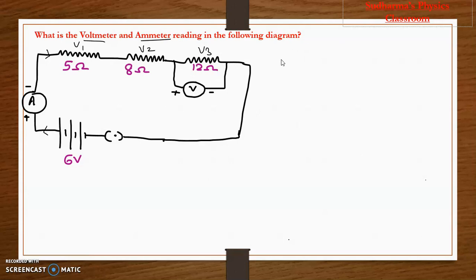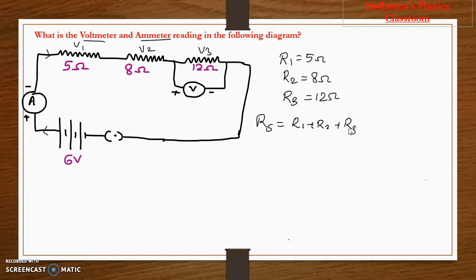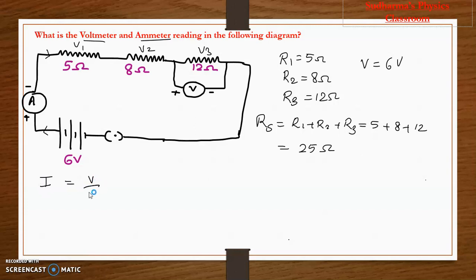Let us write down the data first. R1 = 5 ohm, R2 = 8 ohm, and R3 = 12 ohm. Total resistance R_series = R1 + R2 + R3 = 5 + 8 + 12 = 25 ohms. Total voltage V = 6 volt. The ammeter is connected in series, so ammeter reading means total current. I = V / R_series = 6 / 25 = 0.24 amperes.